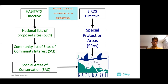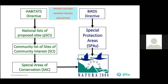We still have those two parallel processes because it's impossible to change the directives. As you can see, for SPAs — bird areas — the process is much easier, while for habitat-based areas the process under the Habitats Directive is considerably more complicated.